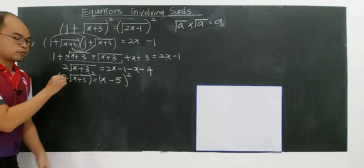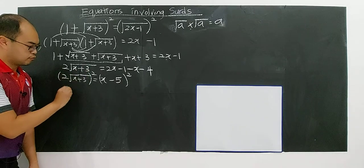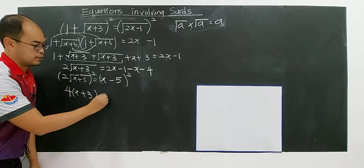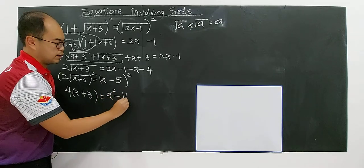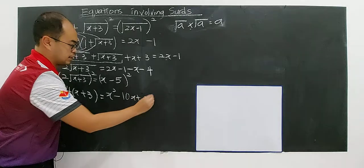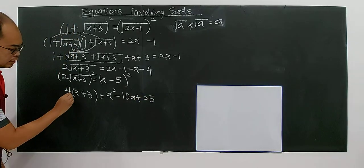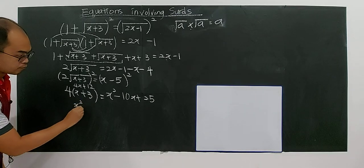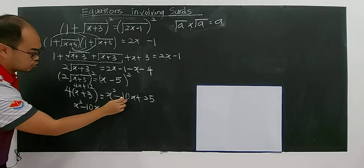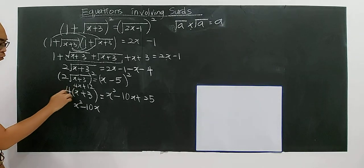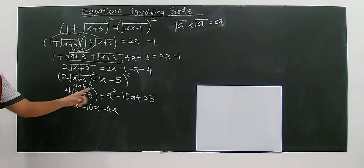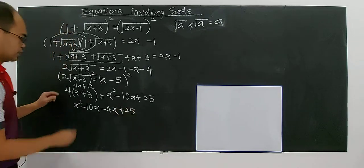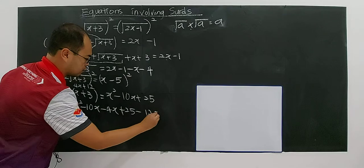So now it's easy. Square both sides. Don't forget the 2 also needs to be squared — 2 squared gives you 4. Bracket x plus 3. Square this, it becomes x plus 3. And this side is a quadratic — expand: x squared minus 10x plus 25. So now rearrange: 4x plus 12 equals x squared minus 10x plus 25. Minus 4x and minus 12, bring to that side, giving negative 10x minus 4x plus 25 minus 12 equals 0.